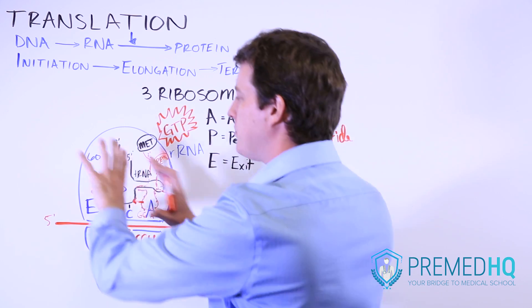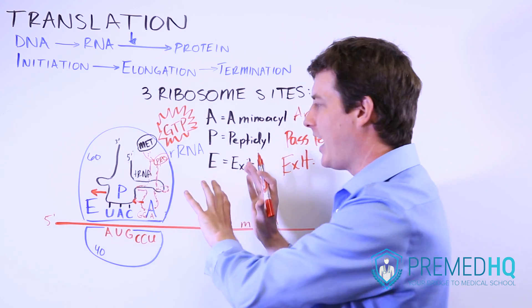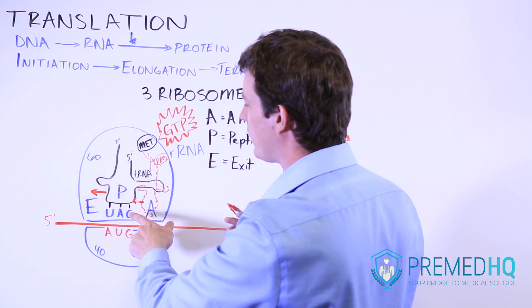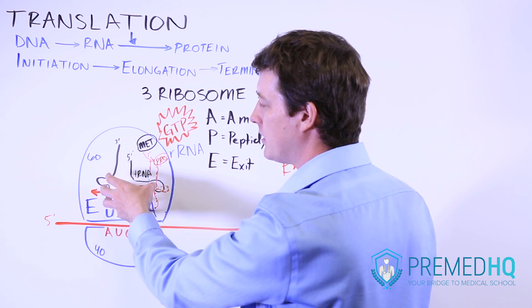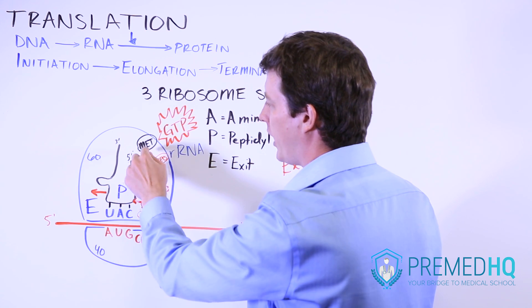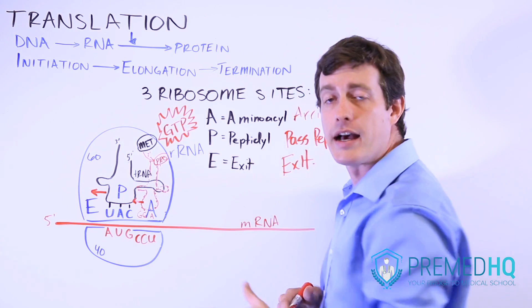During that process, as the P moves over and as the A moves over, now what we'll end up with is this tRNA will end up now being in the P site, and it will have both the methionine and the proline attached.